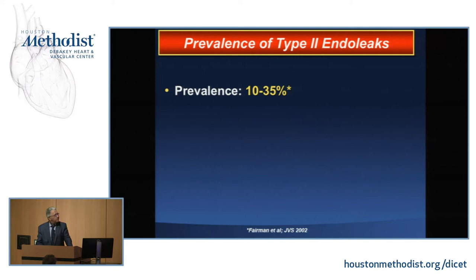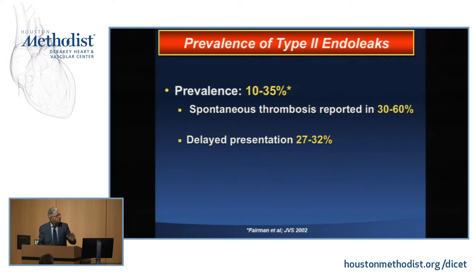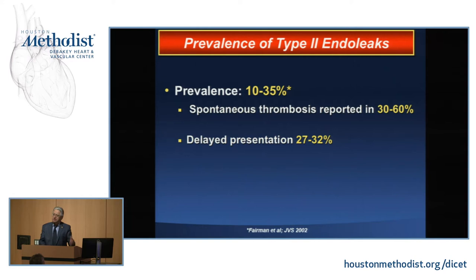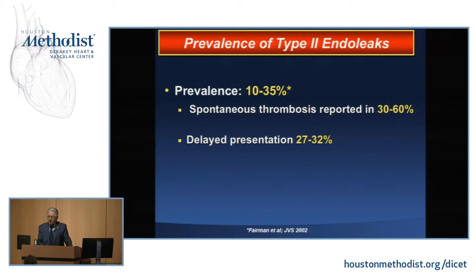There is also a delayed presentation of type 2 endoleak that occurs in 27 to 32 percent of patients. A type 2 endoleak refers to flow into the aneurysm from collateral branches — typically lumbar arteries. There are four pairs of lumbar arteries, as well as the superior mesenteric and inferior mesenteric arteries, and communications among all those branches can persist for a long time or forever.